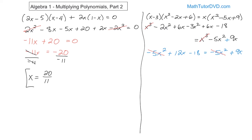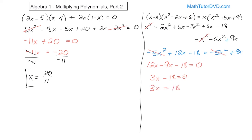Move the 9x to the left by subtracting 9x from both sides: 12x minus 9x minus 18 equals 0, which gives 3x minus 18 equals 0. Add 18 to both sides: 3x equals 18. Divide by 3: x equals 6. That's the final answer.